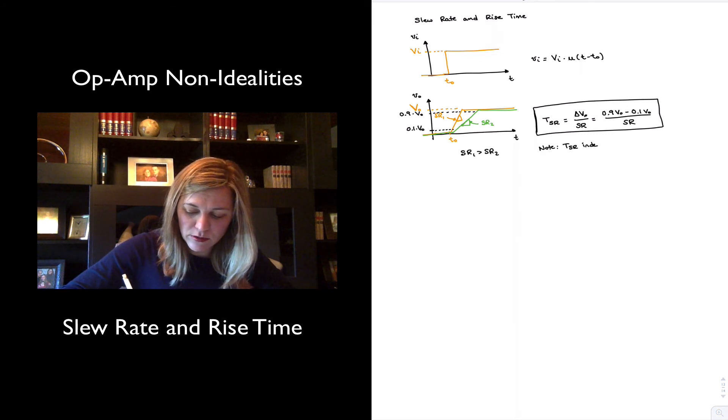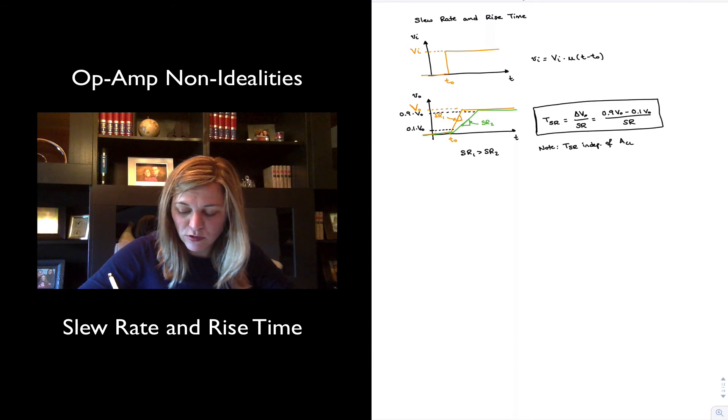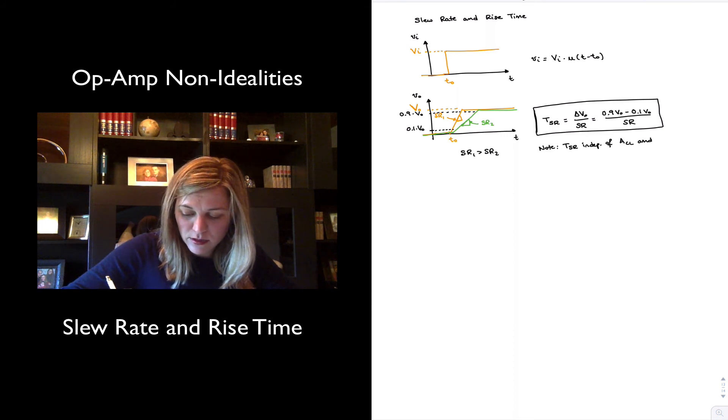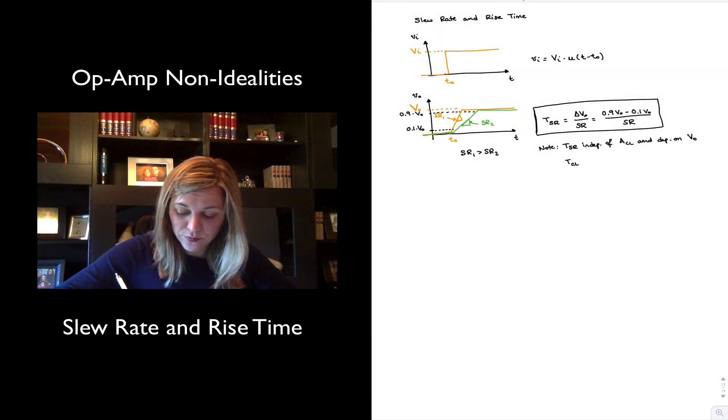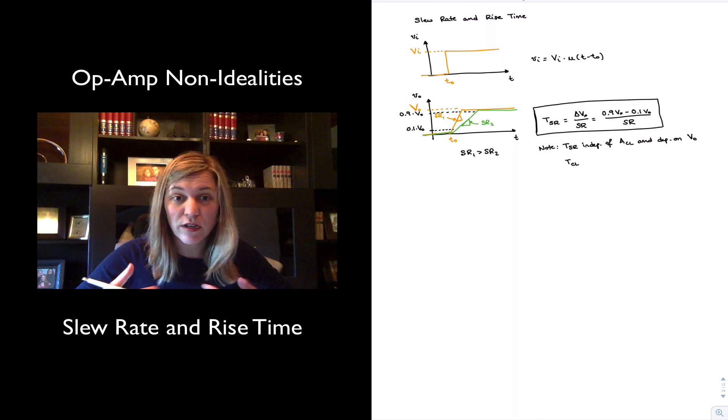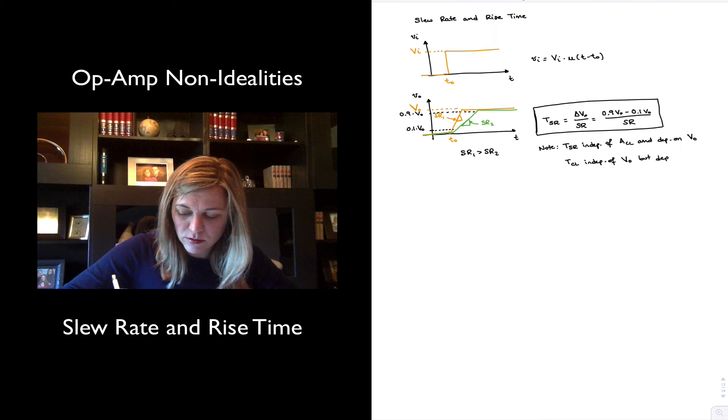TSR is independent of the closed-loop bandwidth and dependent on capital Vout, the maximum level of Vout, whereas TCL was independent of maximum output levels, but it was dependent on the gain. So independent of maximum Vout, but dependent on ACL.